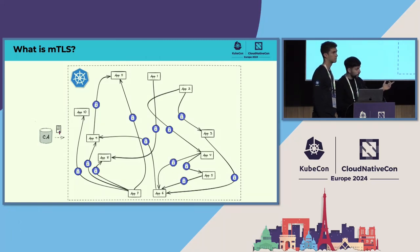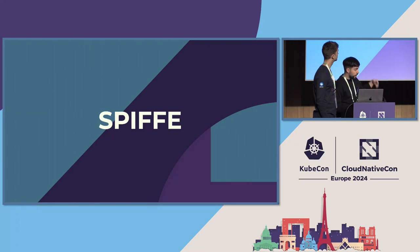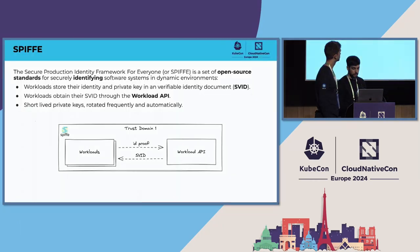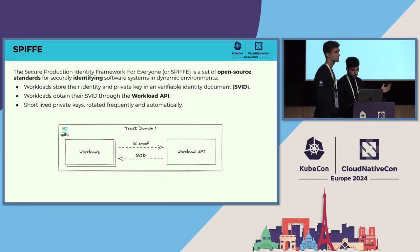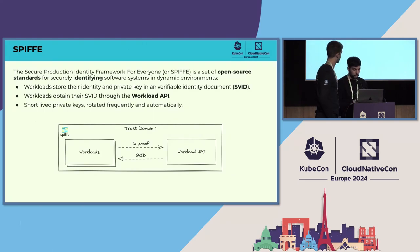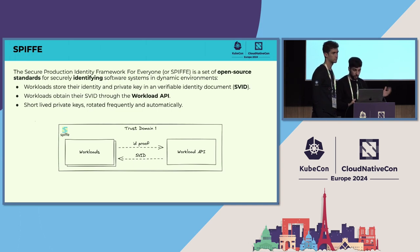The technology that solves this problem is SPIFFE and SPIRE. SPIFFE stands for Secure Production Identity Framework For Everyone. It's an open source standard for securely identifying software systems in dynamic environments. Basically, SPIFFE is just a standard — it talks about how to design your system to be compliant with SPIFFE.